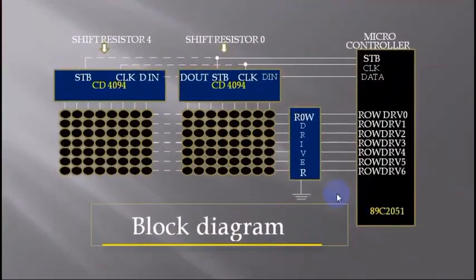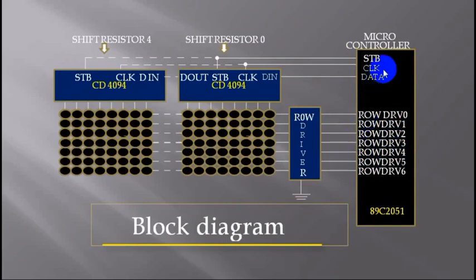This is the block diagram. There is a microcontroller which controls each hardware element of this circuit. I have used 7 input-output pins to control 7 rows, and 3 input-output pins to control shift register ICs as data, clock, and strobe.